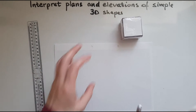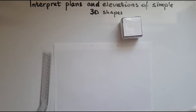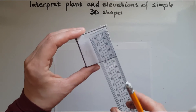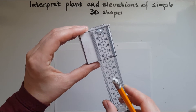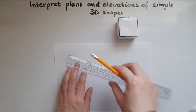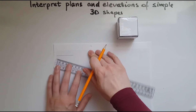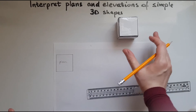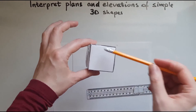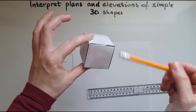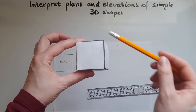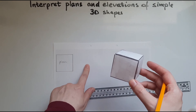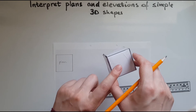So let's start with the plan. I'm going to draw a square, but I need to measure the dimensions of the cube. We've got five centimetres by five centimetres. Looking at the front, this is identical with the same measurements, because a cube has six faces of the same size. So we'll do the same for the front elevation and the side elevation as well.